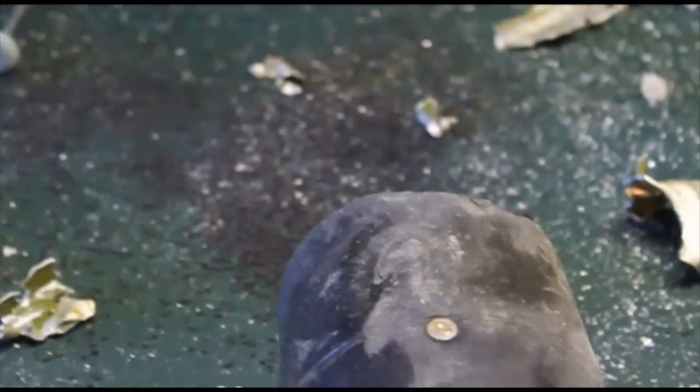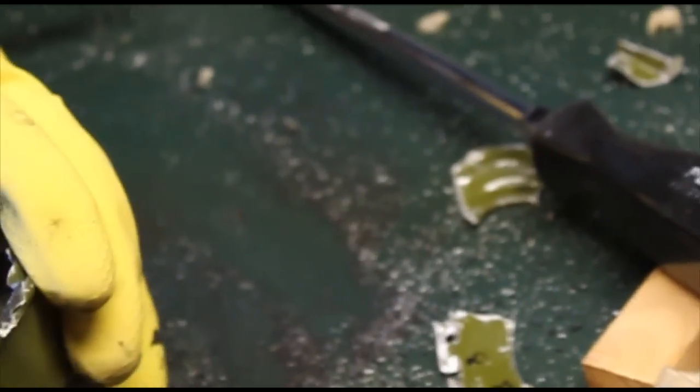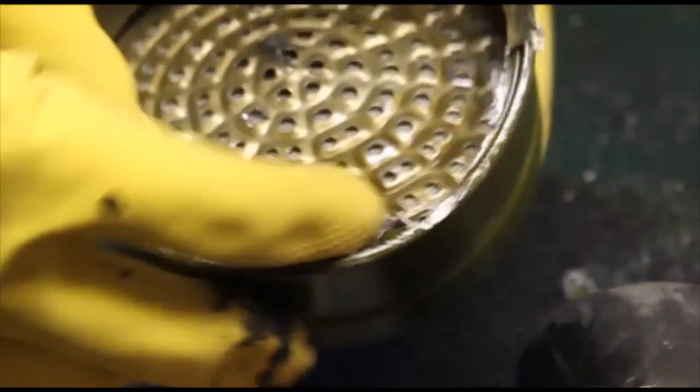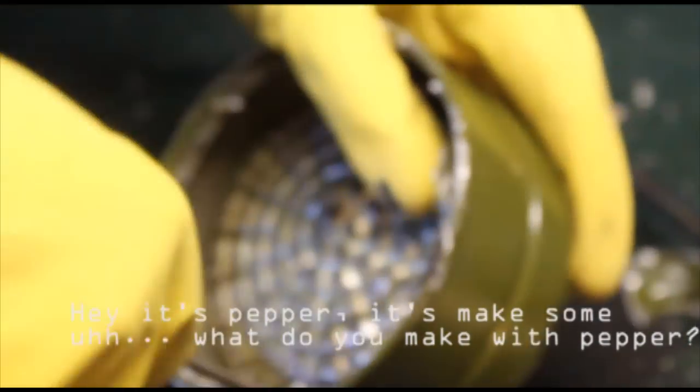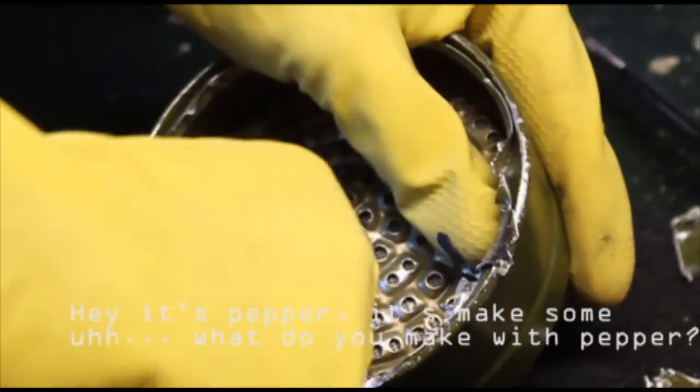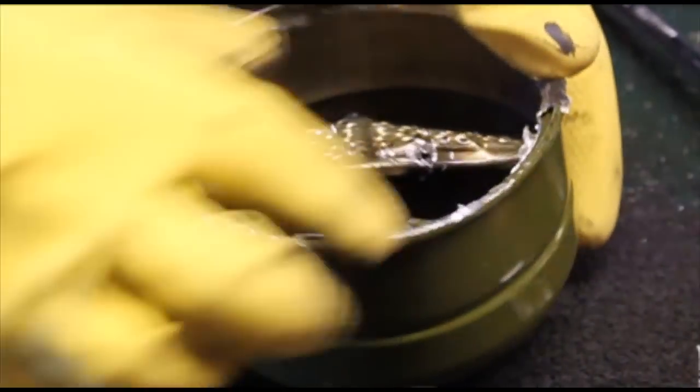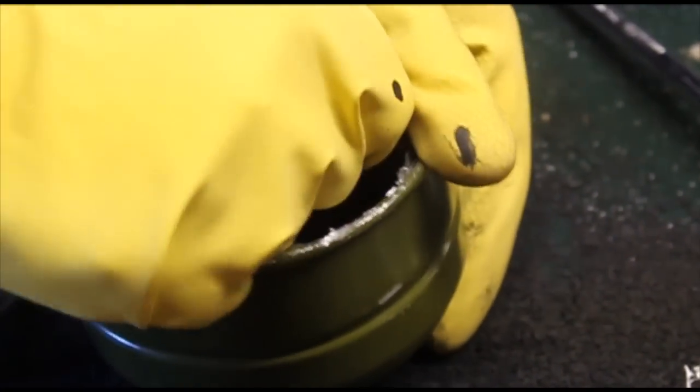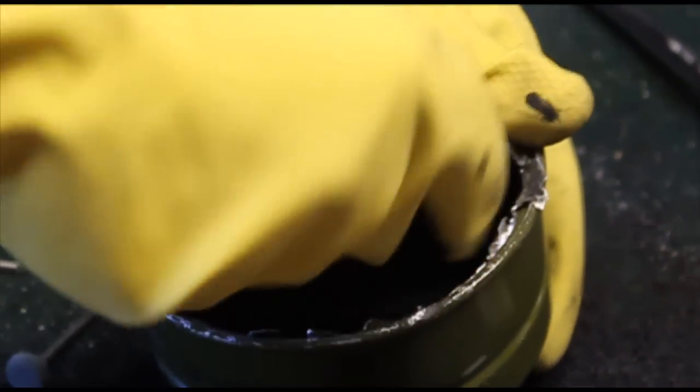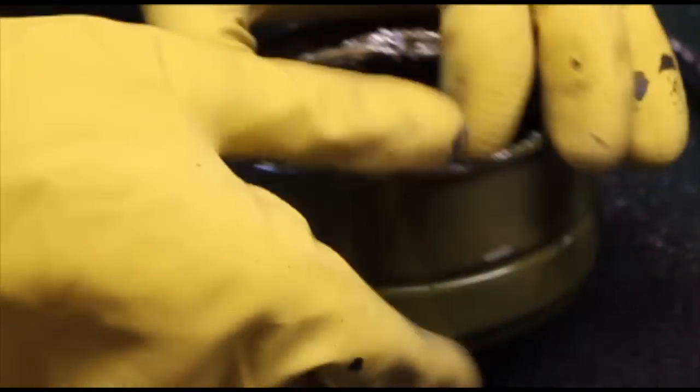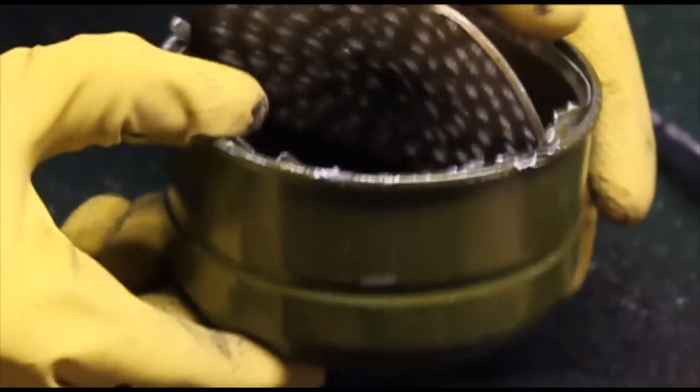We broke something. Oh my gosh. This is not asbestos. This is carbon. Expired carbon. There we go. We got something now. We got a big mess. Hey, it's pepper. Let's all make some, what do you make of pepper? Coffee. Who knew they filled these with coffee? Coffee you probably don't want to drink, though. There it is. It's all that's in there, I guess.